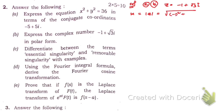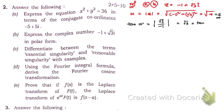The complex number is -1 + √3·i. First, find r = |z| = √((−1)² + (√3)²) = √(1 + 3) = √4 = 2. So r = 2. Next, find tan α = |imaginary part / real part| = √3 / 1 = √3. Since tan(π/3) = √3, we get α = π/3.